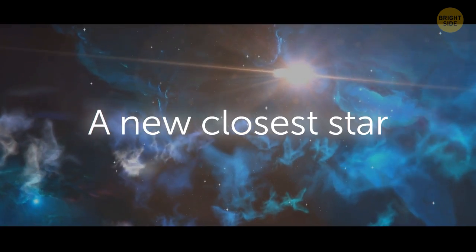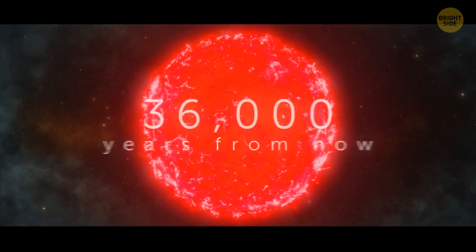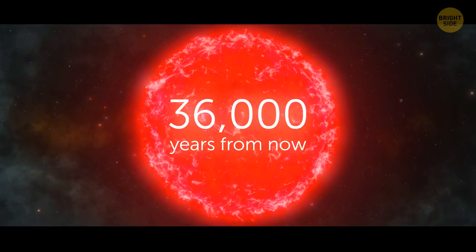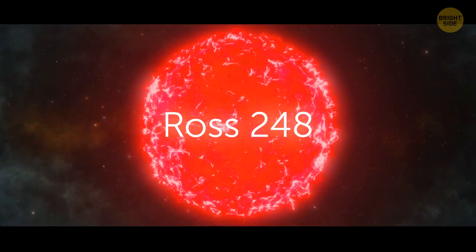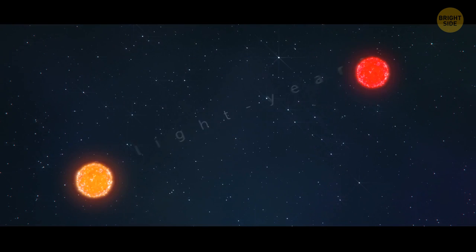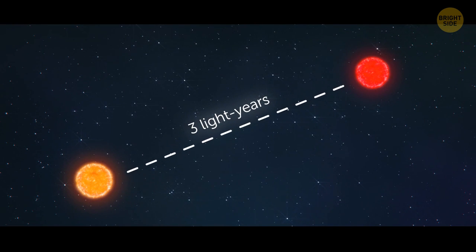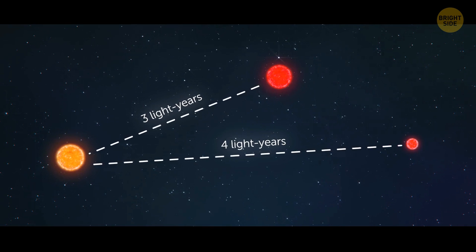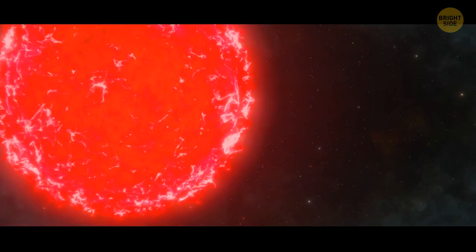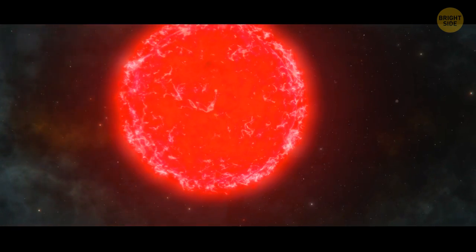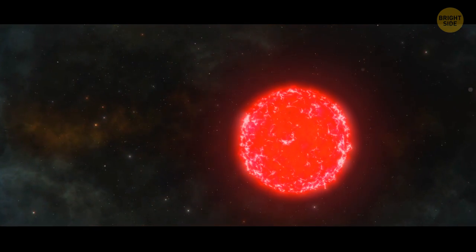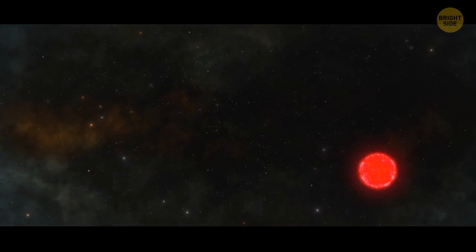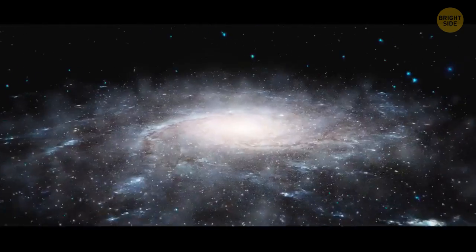A new closest star. About 36,000 years from now, the Ross 248 star will become our new closest neighbor. It'll be just 3 light-years away from us and overtake the title from Proxima Centauri, which is a bit more than 4 light-years away. Ross 248 will remain the nearest star for around 9,000 years and then move away once again.